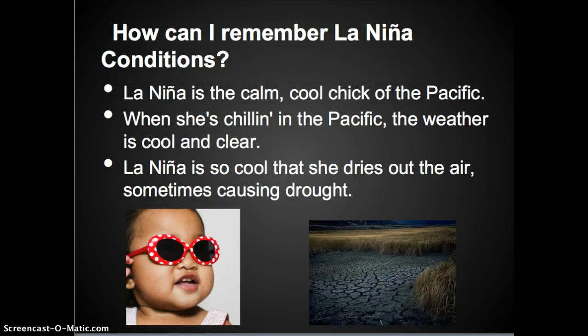How can I remember La Niña conditions? La Niña is the calm, cool chick of the Pacific. When she's chilling in the Pacific, the weather is cool and clear. La Niña is so cool that she dries out the air, sometimes causing drought. That's all for El Niño and La Niña. I hope this helps.